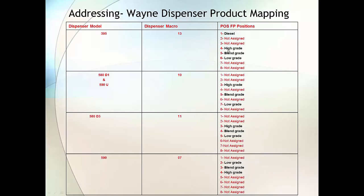In the fourth position is high, the fifth position is blend, and the sixth is low. Now, where that comes into play is when the POS is programmed — in the POS configuration, diesel must match this. So diesel has to be in the first hose position.